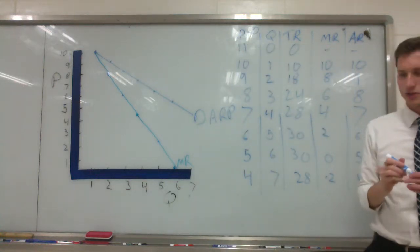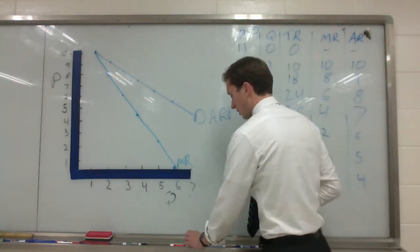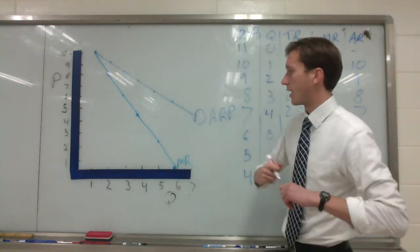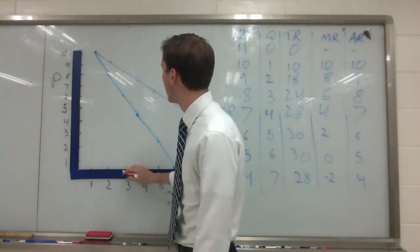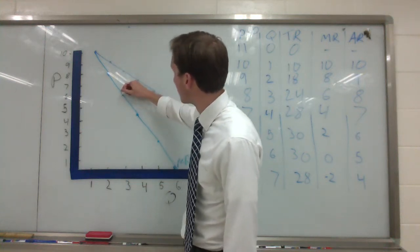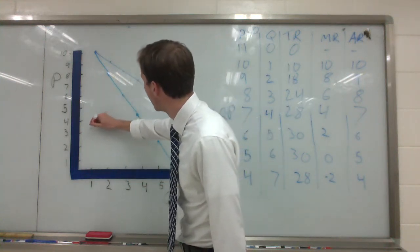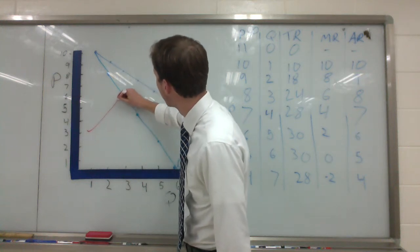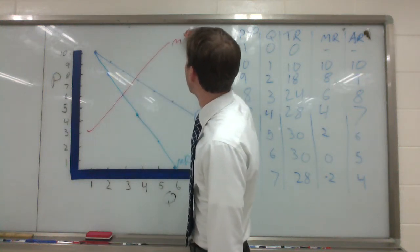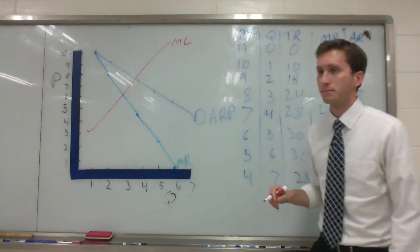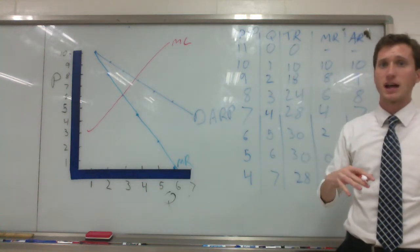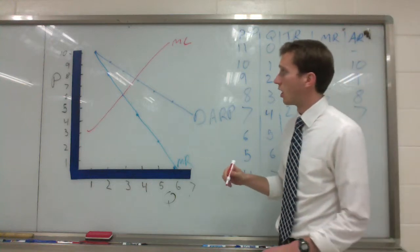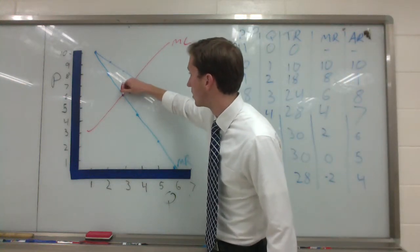I'm going to throw in a cost curve. So let's just say that at a quantity of 3, that's going to be meeting the marginal revenue curve at 8. I'll draw the cost curve. Going up like that. Now with marginal cost, marginal revenue, same rules still apply as back from perfect competition. Our profit maximizing quantity is right here.